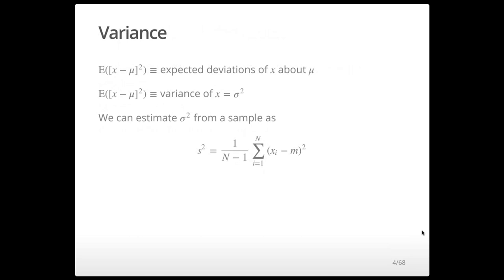The variance is the expectation of the deviations of x about the mean value. We define this as E of (x minus mu) squared — the deviation squared — to be the variance of x, using the symbol sigma squared. We can estimate the variance from a sample as the sum of squared deviations divided by n minus 1, losing one degree of freedom for having to estimate the mean.